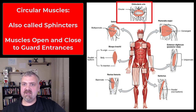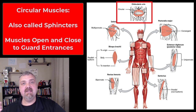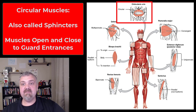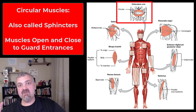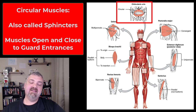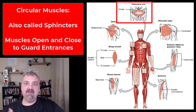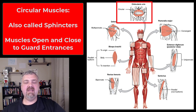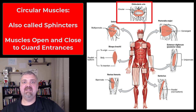The last group is the circular muscles, also called sphincters — they open and close and guard entrances to the body. The orbicularis oris can compress the lips, and the orbicularis oculi closes the eyes. Those are skeletal muscle sphincters. Most of our sphincters are smooth muscle and involuntary, like the sphincters that allow stuff to move from the stomach into the small intestine. Those are the four ways we classify muscles based on fascicle organization and arrangement.